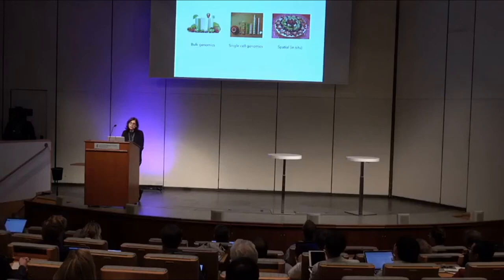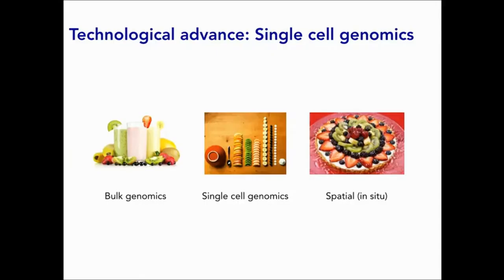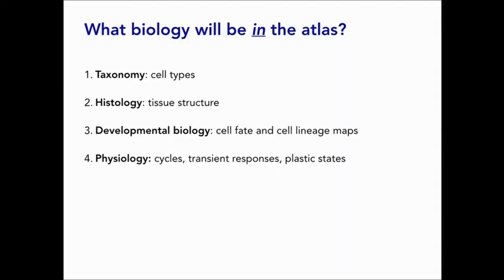In the last few years, because of technical advances in our ability to profile individual cells — both as they are dissociated from tissue and increasingly in the context of tissue — we can start thinking about putting all of this together to build a reference map of the cells of the human body. I want to take a few minutes today to think about the types of biology we could learn from this kind of reference map, the computational challenges it would introduce, and why we do it — not just for basic understanding of biology, but also for human health.